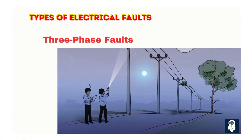Three-phase faults are short-circuits between all three phases. They are the most severe and can occur with or without grounding. Three-phase faults can lead to high fault currents and significant damage to equipment if not quickly addressed. They are typically caused by factors such as equipment failure, lightning strikes, or human error. The effects of three-phase faults include power outages, equipment damage, and potential safety hazards for workers.